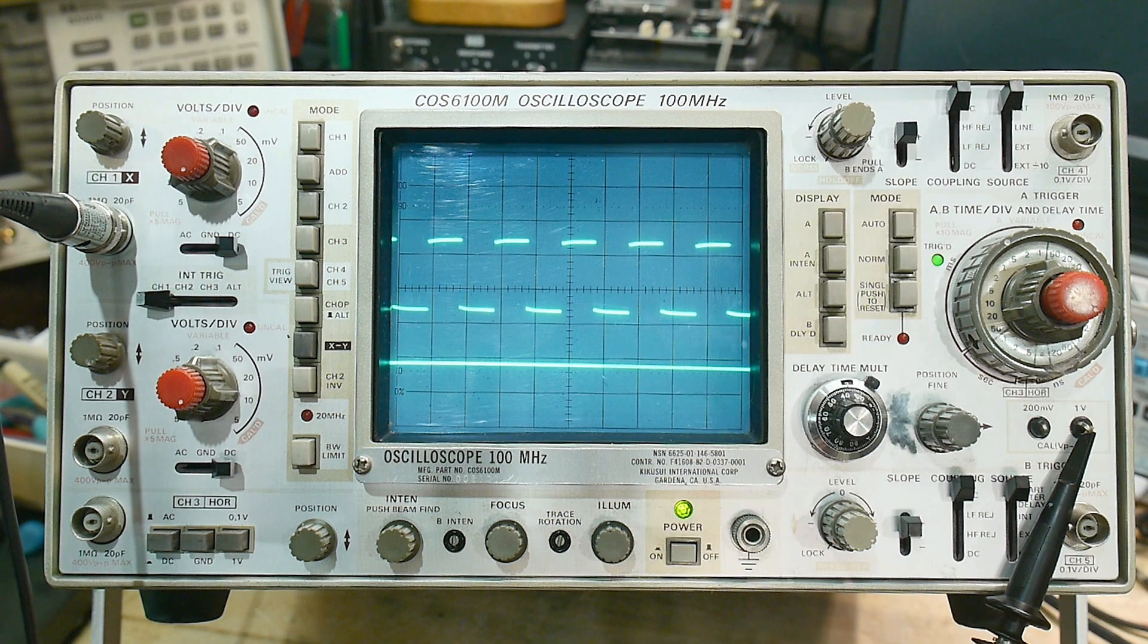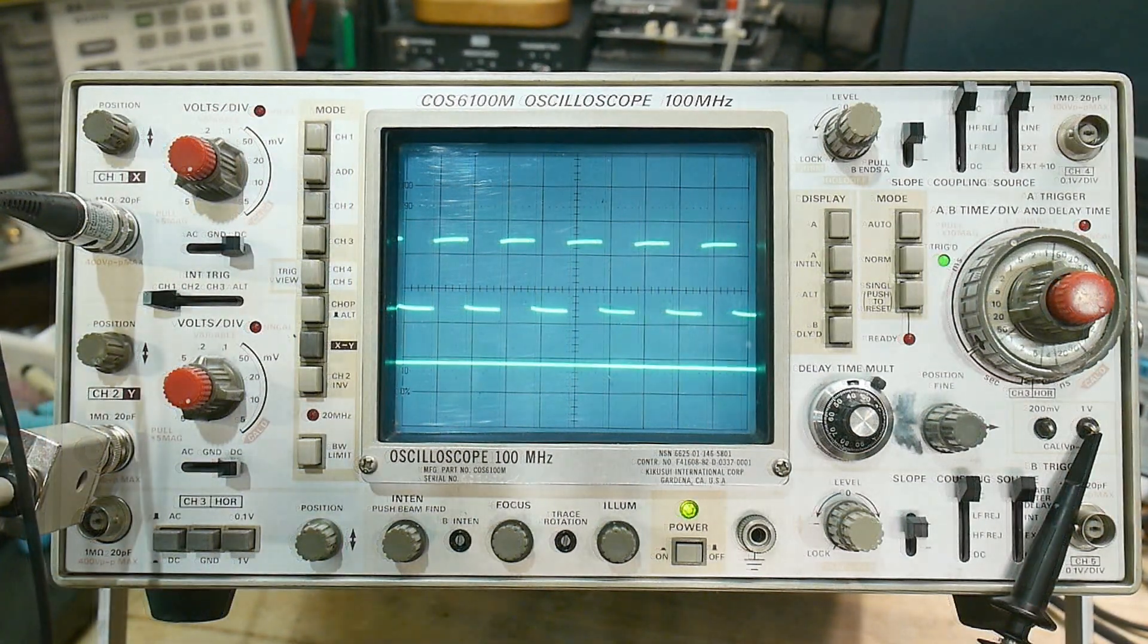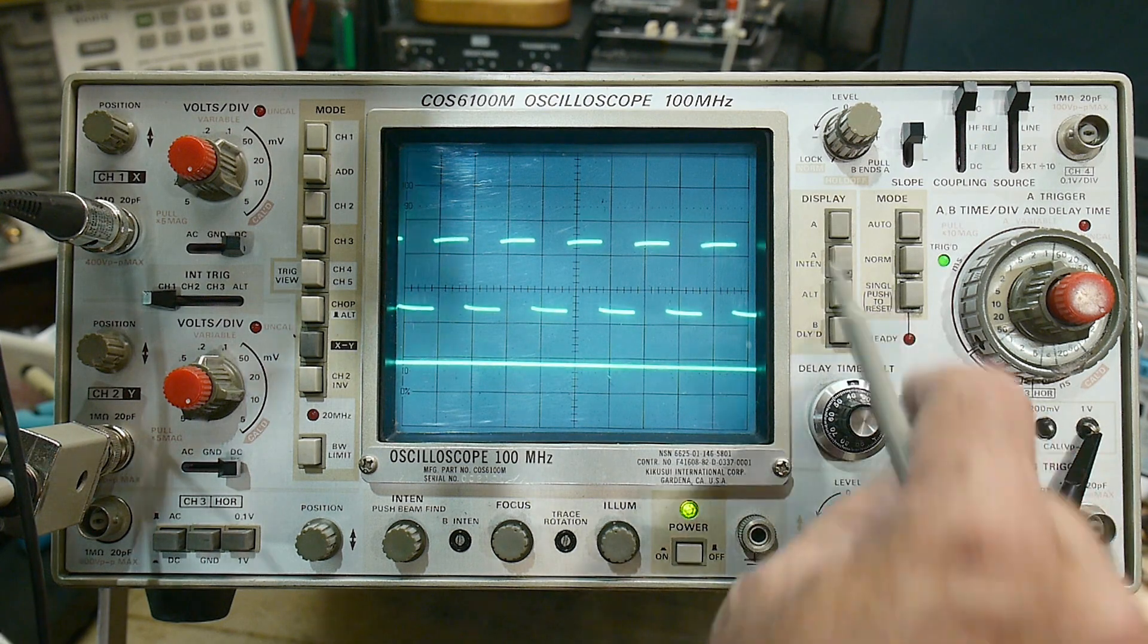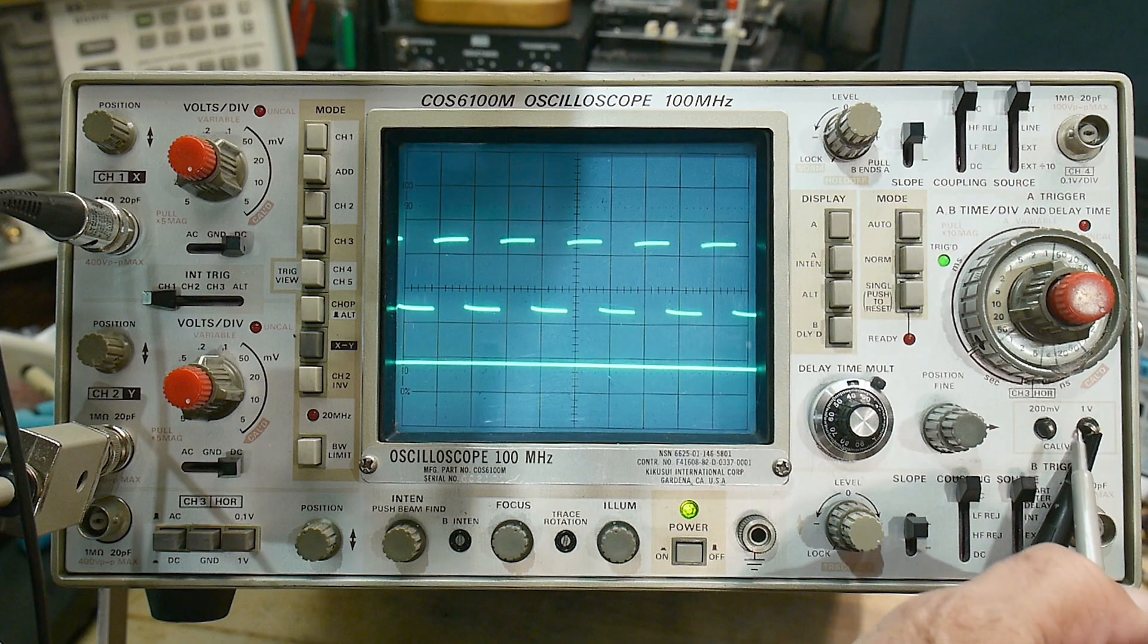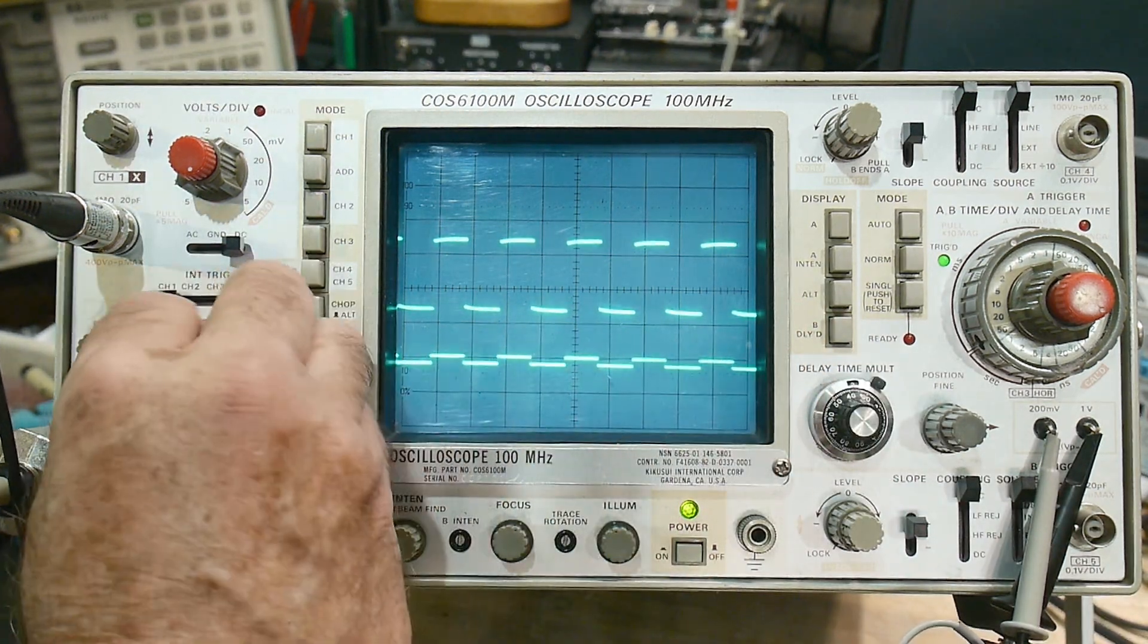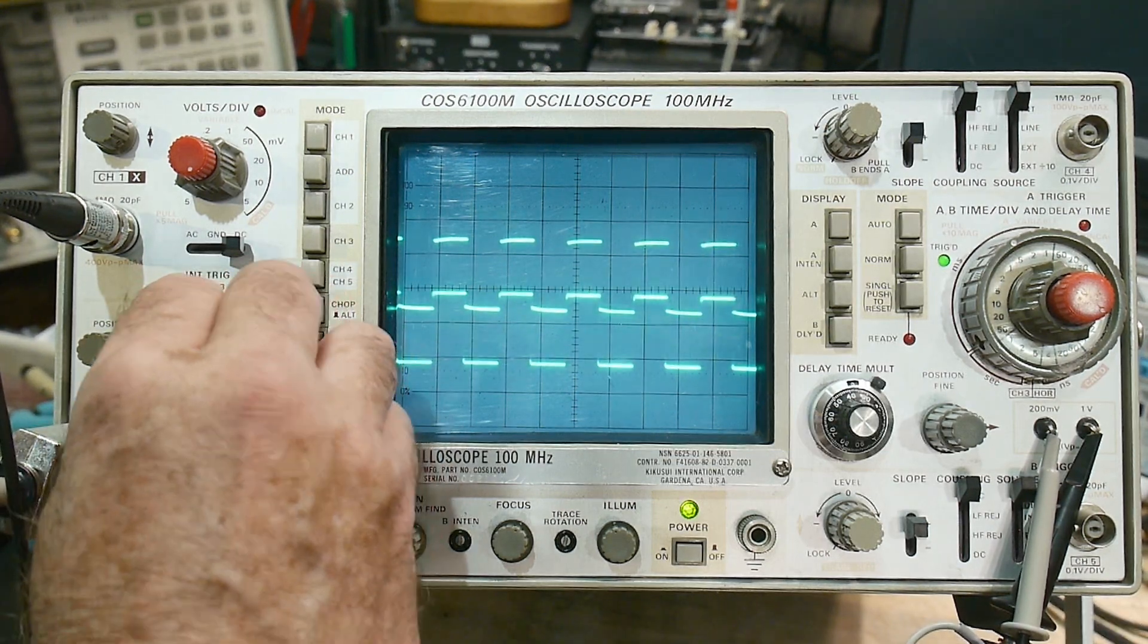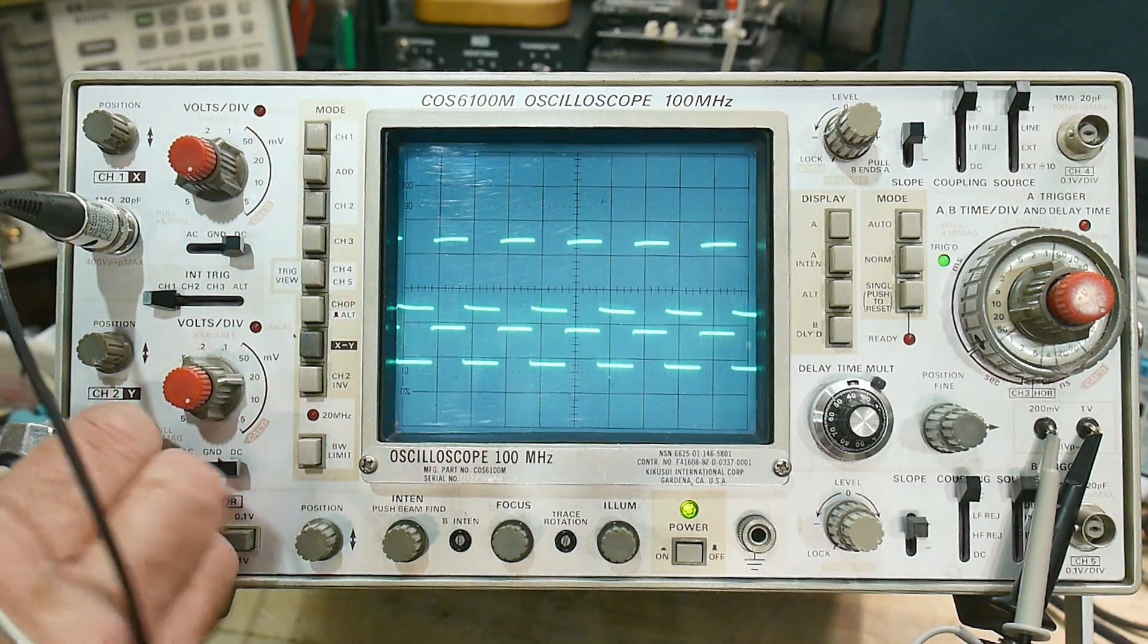Let me get a second scope probe. All right, I found another scope probe here, and we have two calibrators, a one volt calibrator and a 200 millivolt calibrator, so there you go, there's channel two. Channel two is working fine. But check this out, there's a channel three.